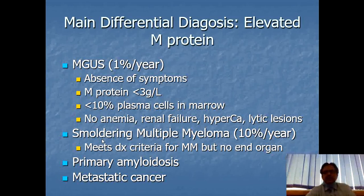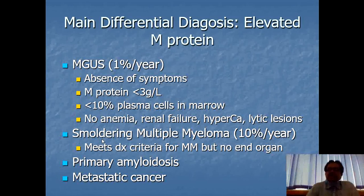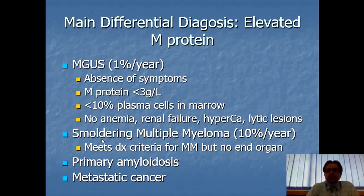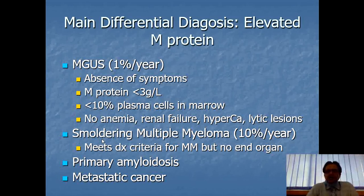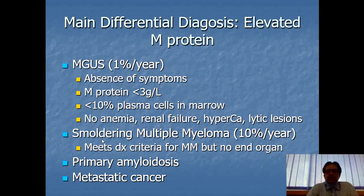For differential diagnosis: MGUS (monoclonal gammopathy of unknown origin) has an elevated M protein but less than 3 g/dL, plasma cells less than 10% in the marrow, and no anemia, renal failure, hypercalcemia, or lytic lesions on skeletal survey — contrary to multiple myeloma. Smoldering multiple myeloma is non-active or asymptomatic myeloma; it meets criteria for myeloma but causes no end organ damage.